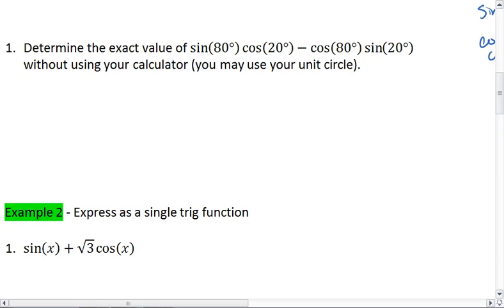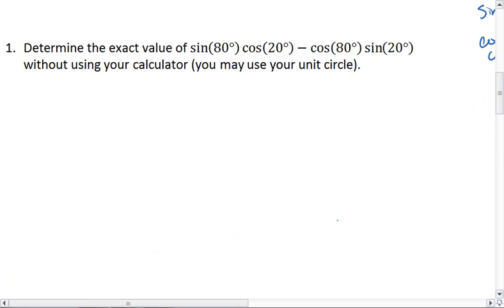All right, how about this example? Determine the exact value of sine 80 cosine 20 minus cosine 80 sine 20. Okay, so take a moment, look at this, and look at how this might be similar to one of your sum difference formulas. Try to figure out the answer on your own first. If you can't, then resume the video and check the solution.